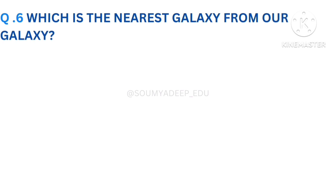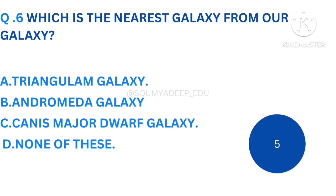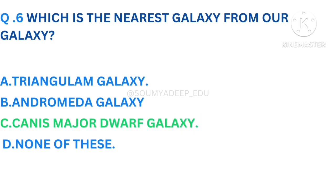Which is the nearest galaxy from our galaxy? The options are Triangulum Galaxy, Andromeda Galaxy, Canis Major Dwarf Galaxy, none of this. Your time starts now. The answer is Canis Major Dwarf Galaxy. Let's move to the next question.